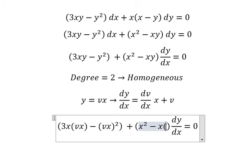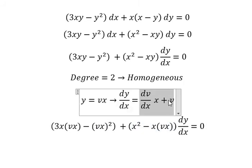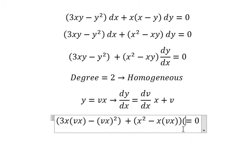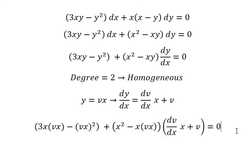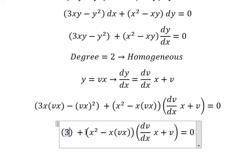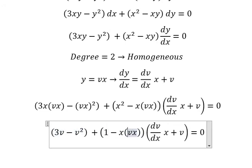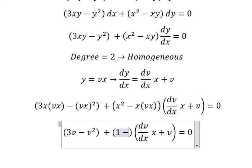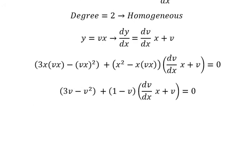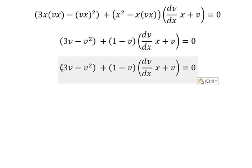And where we have dy/dx, we change by this one. Now we need to simplify. We can factor out x² for both sides, and we have (3v - v²) plus (1 - v) times ((dv/dx)x + v) equals 0. Next I will put this one to the right.